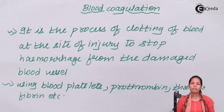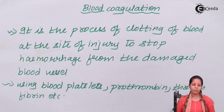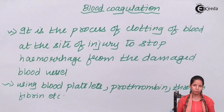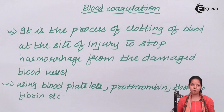This prothrombinase converts prothrombin into thrombin. Prothrombin is made with the help of vitamin K, and thrombin then acts on two different components — fibrinogen, which is soluble, and fibrin, which is insoluble. It is the fibrin that finally carries out the clotting.